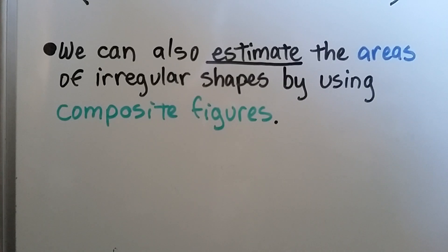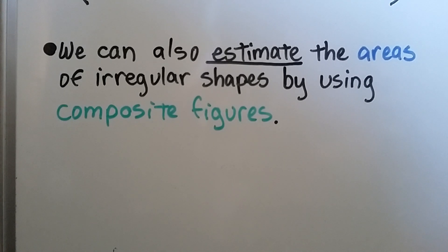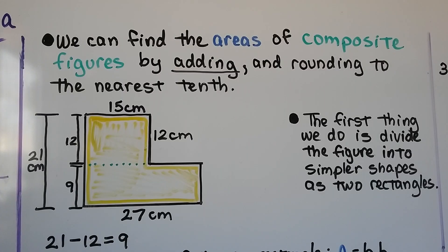We can also estimate the areas of irregular shapes by using composite figures. We can find the areas of composite figures by adding and rounding to the nearest tenth.